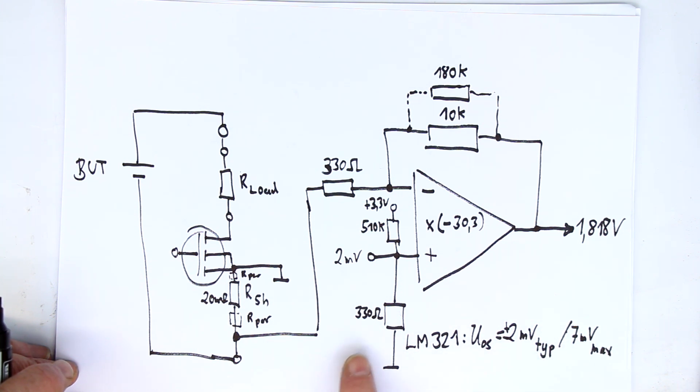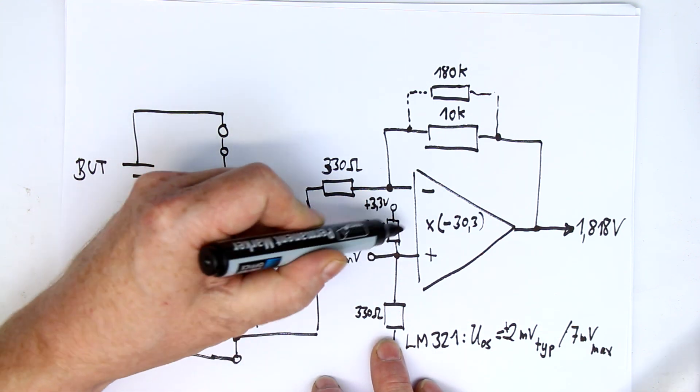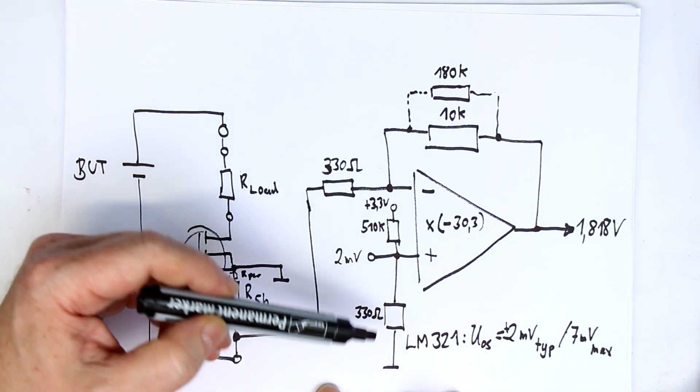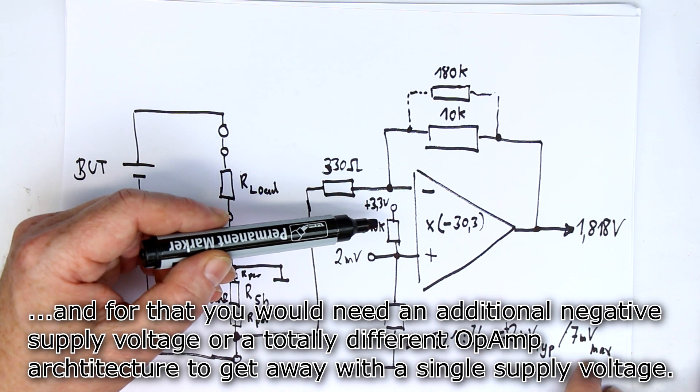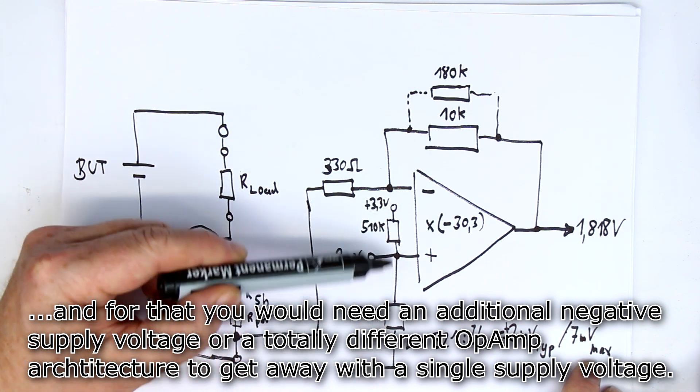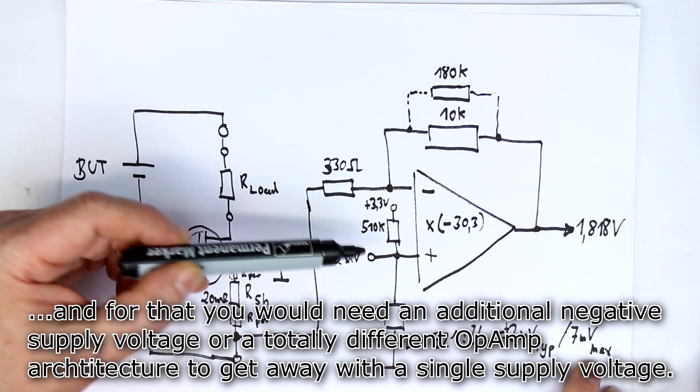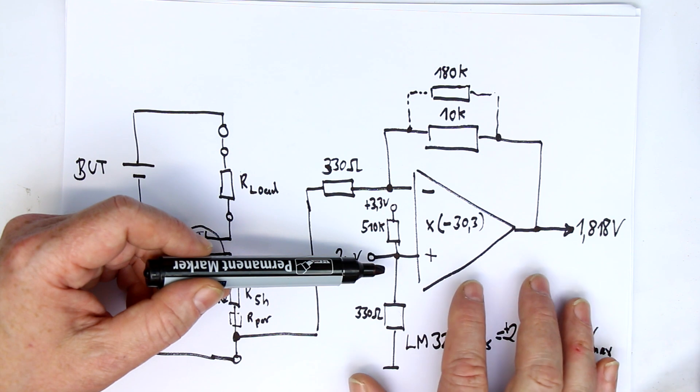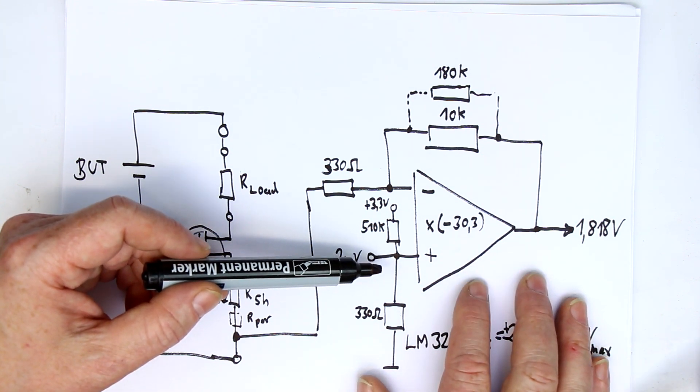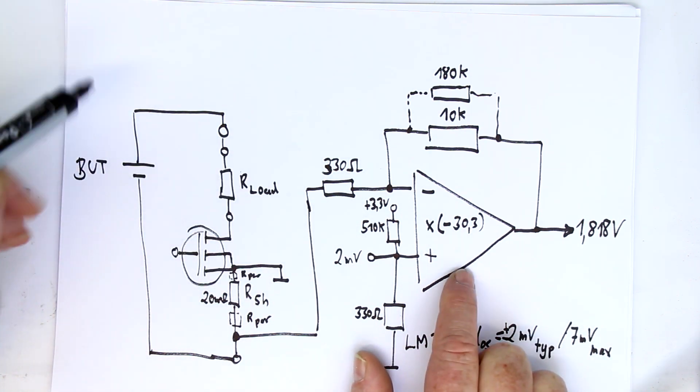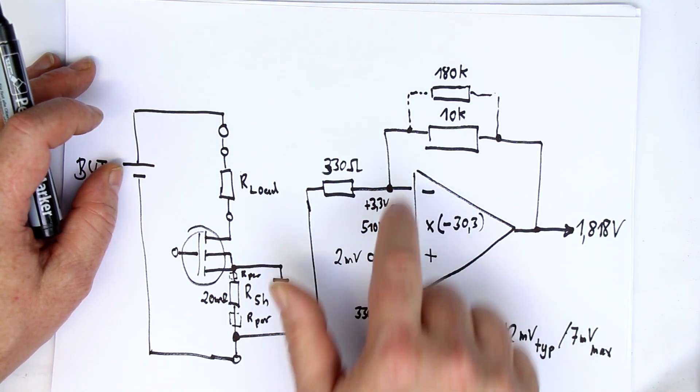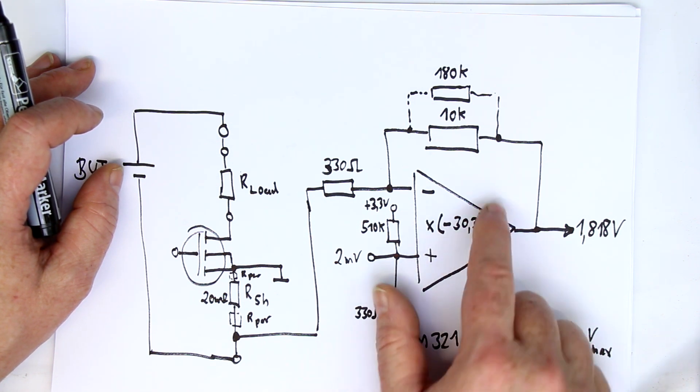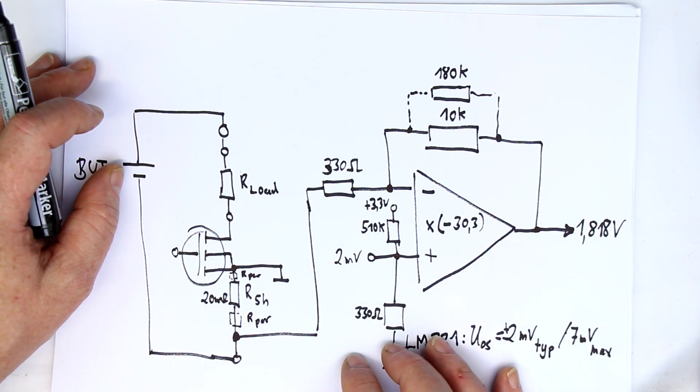First of all, the offset voltage can of course be plus or minus 2 millivolts. And secondly, typical means it could be anywhere between plus and minus 2 millivolts, and the maximum would be between plus and minus 7 millivolts. If you really want to trim out the offset voltage here, first of all you would have to make one of the two resistors trimmable, and you would have to connect the negative terminal to minus 3.3 volts so that it can trim between the maximum possible values between plus 7 millivolts and minus 7 millivolts. This is of course totally wrong here what is done.